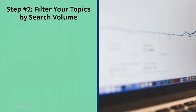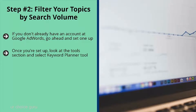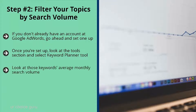Step number two: filter your topics by search volume. If you don't already have an account at Google AdWords, go ahead and set one up at adwords.com. Log in with your existing Gmail account and set up an AdWords account. Once you're set up, look at the Tools section and select the Keyword Planner tool. Type in the topics you're interested in one by one to get a list of keywords and their average monthly search volume — this gives you a rough idea of demand for those niches.